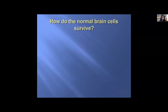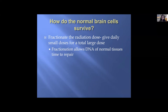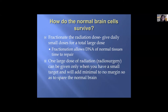Normal brain cells survive because we fractionate the radiation dose — giving daily small doses for a large total dose. This fractionation allows the DNA of normal tissues time to repair using their repair mechanisms, whereas cancer cells lack this mechanism and die off. One large dose, defined as radiosurgery, can only be given for a small target with minimal margin, sparing normal brain and causing near-immediate cell death of the tumor.